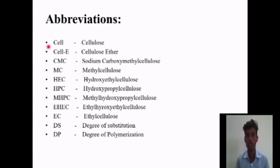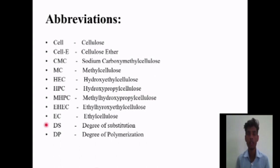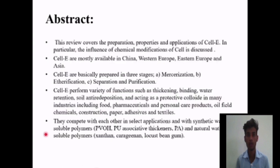Abbreviations: Cell is for cellulose, CellE for cellulose ether, CMC for sodium carboxymethylcellulose, MC for methyl cellulose, HEC for hydroxyethyl cellulose, HPC for hydroxypropyl cellulose, MHPC for methyl hydroxypropyl cellulose, EHEC for ethyl hydroxyethyl cellulose, EC for ethyl cellulose, DS for degree of substitution, and DP for degree of polymerization.